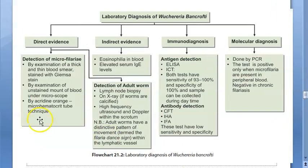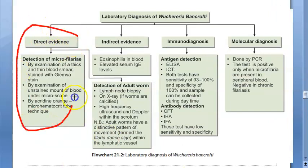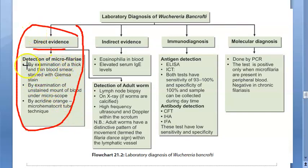Demonstrating microfilaria in chylous urine or blood is direct evidence. For direct diagnosis, you use thick and thin blood smear stained with Giemsa stain and check for microfilaria. You are checking only for microfilaria, not the adult worm.